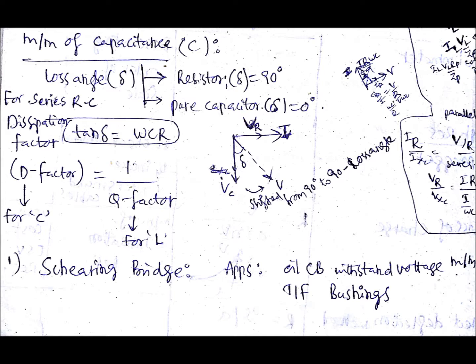And in that case, delta is the angle between voltage V and voltage across the capacitor VC. What is that V? V is the voltage applied across the R and C, and VC is the voltage across just C. That is the difference.